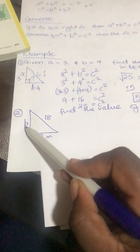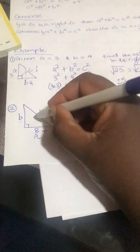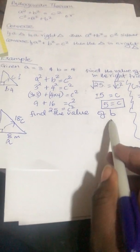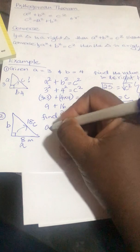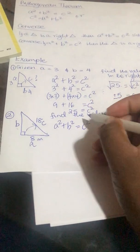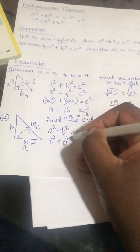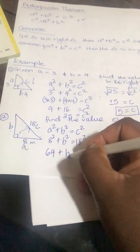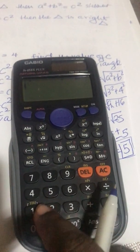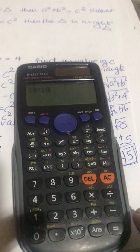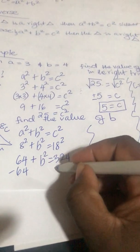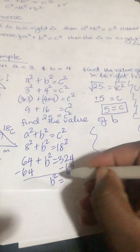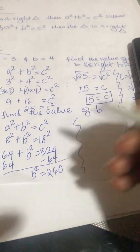Now you've been given a right triangle and told to find b. If they told you to find b, this is automatically a and this is automatically c. Label your triangle. Find the value of b in this triangle. Write a squared plus b squared equals c squared. 8 squared plus b squared equals 18 squared. 64 plus b squared equals 324. 324 minus 64 gives b squared equals 260.